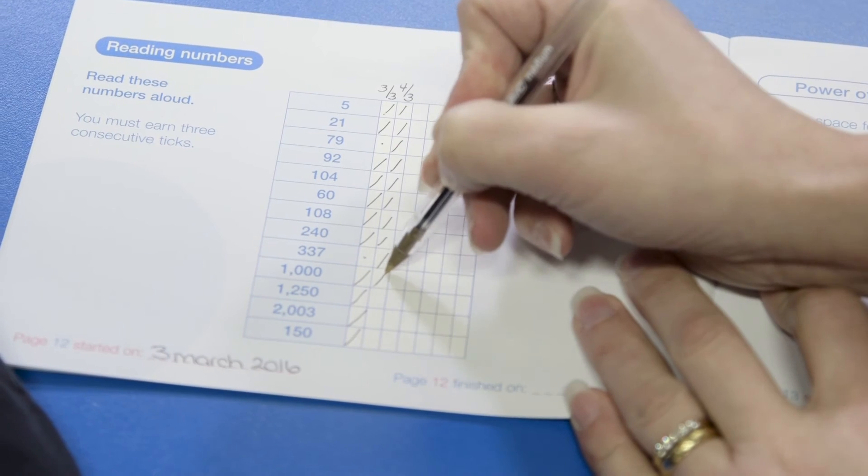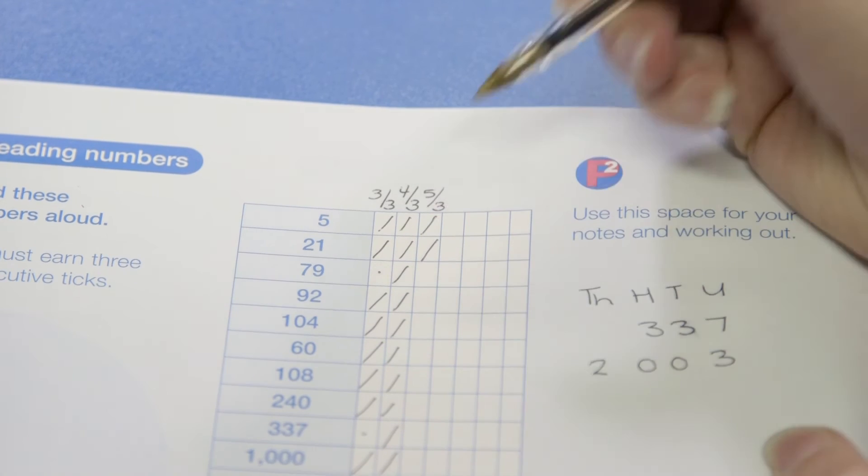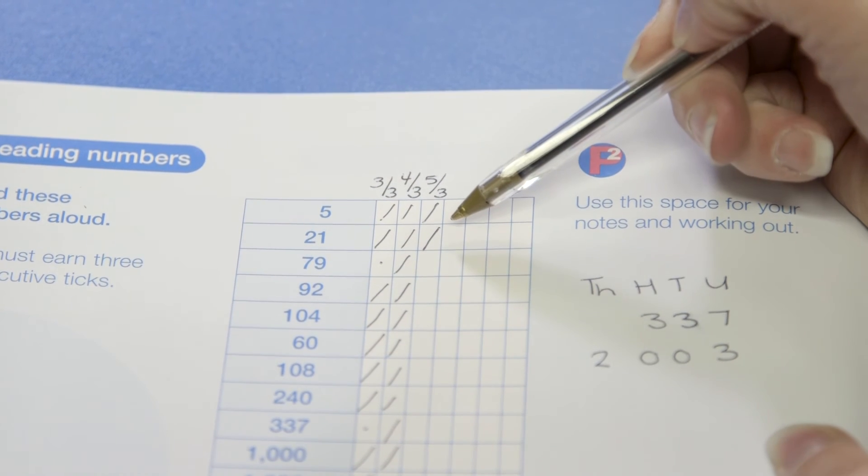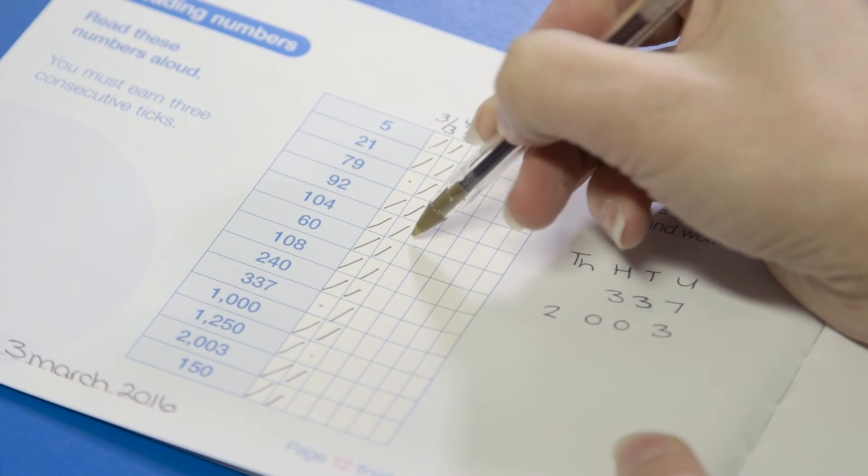When you have three consecutive ticks for a question, that question is now complete. There's no need to ask that question again. Some questions may have dots, so continue to return to these questions until they've also got three consecutive ticks.